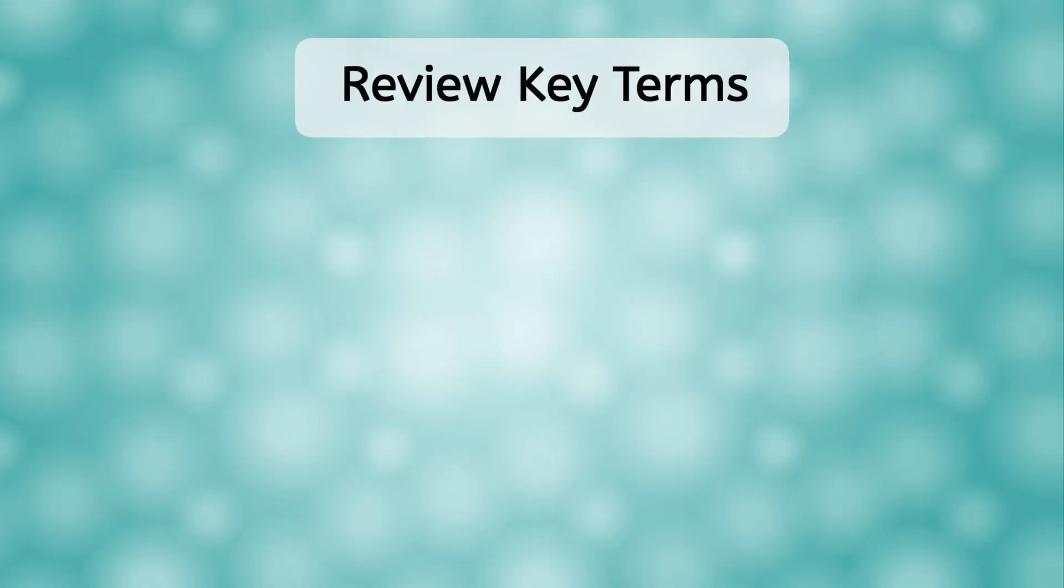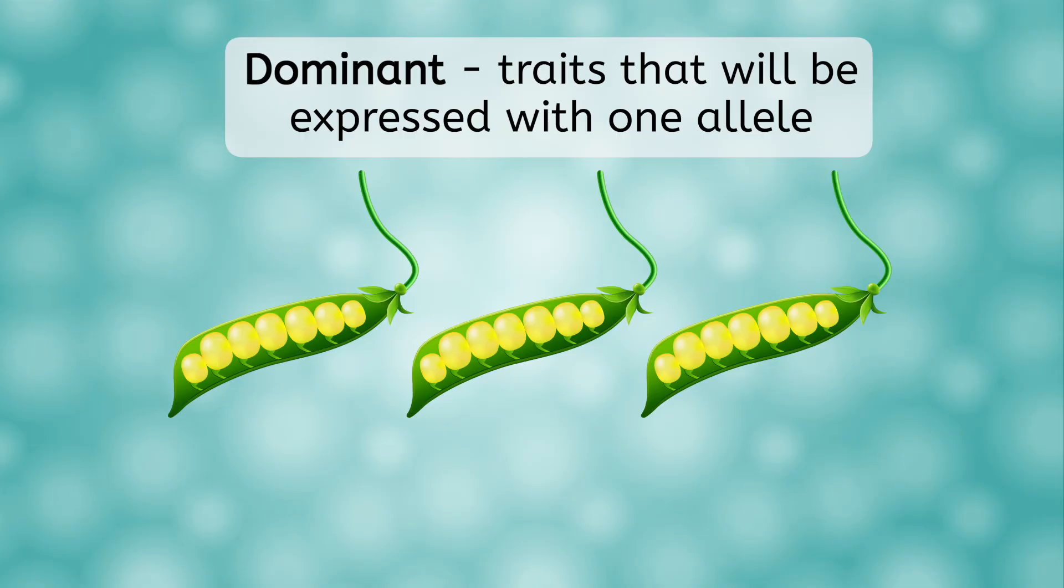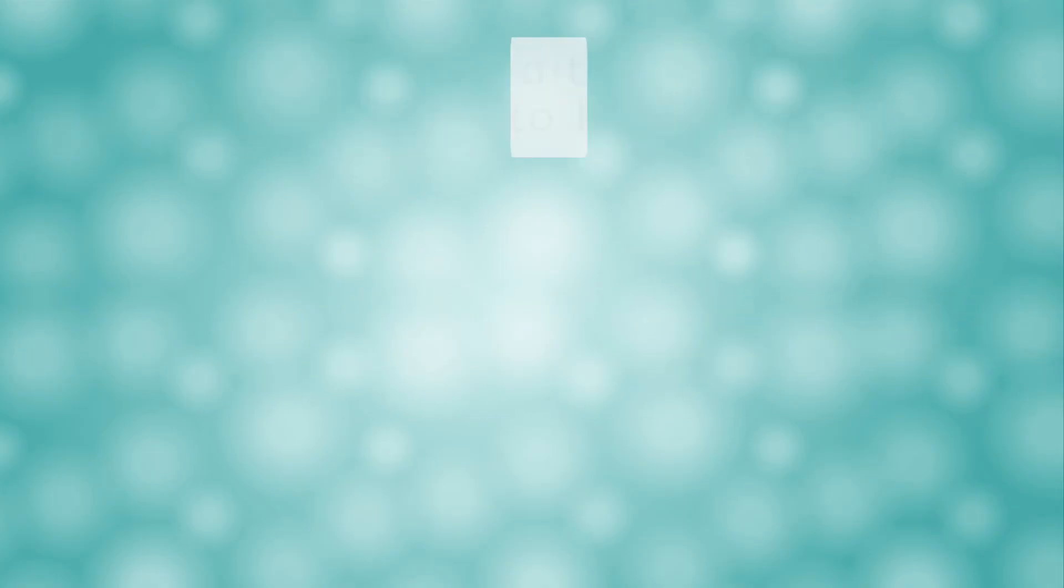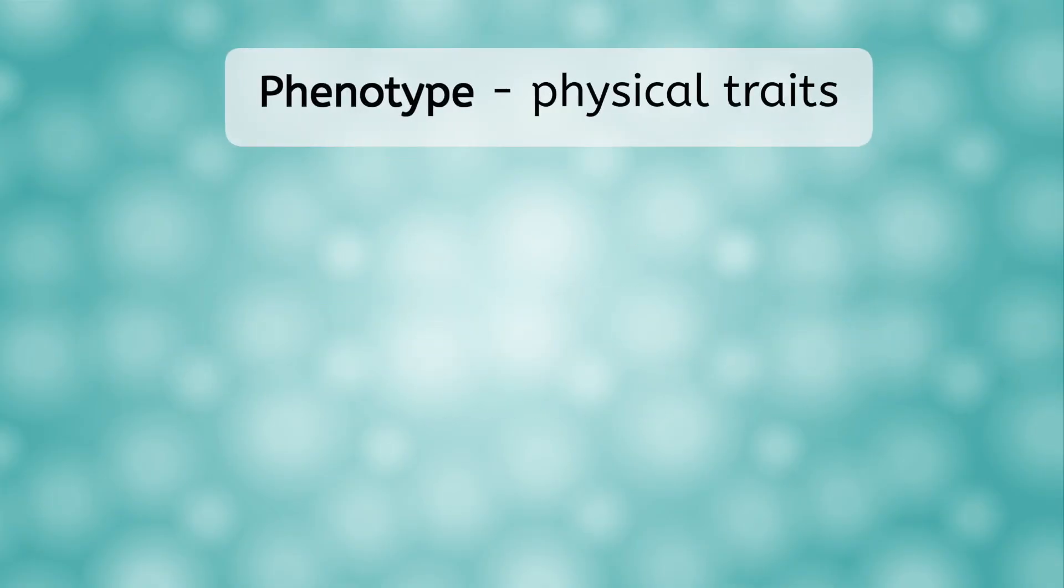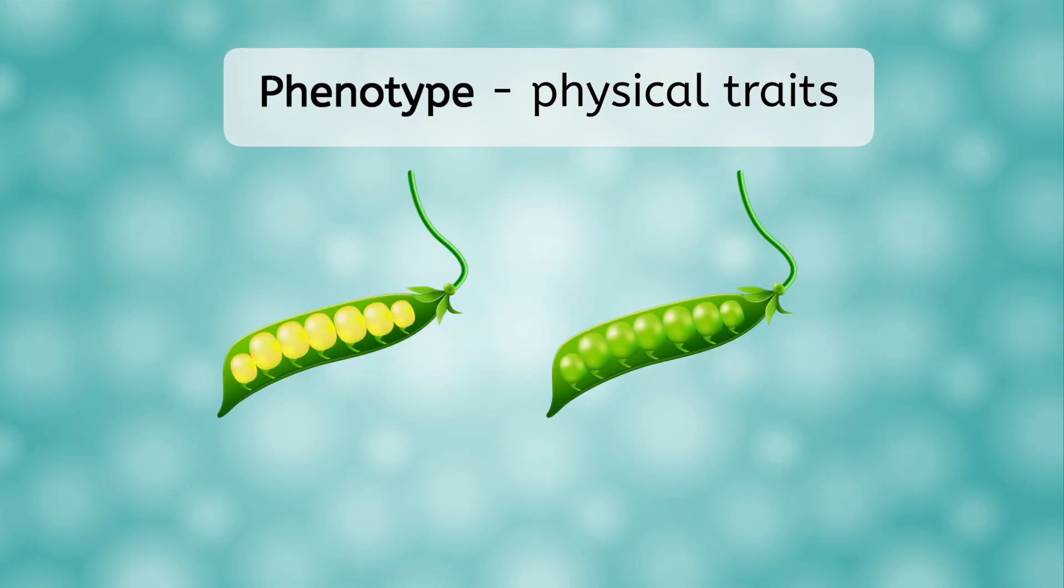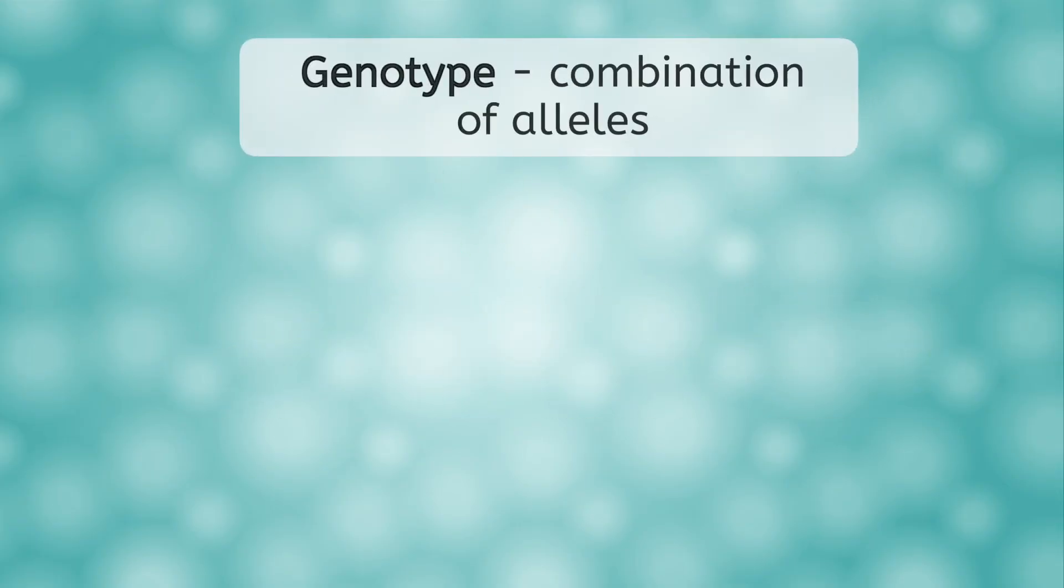Let's review some of the key terms you learned in the lesson today. We first learned about dominant and recessive traits and saw that dominant traits will always be expressed if at least one allele is present for them. Recessive traits require both alleles to be present in order to be seen. The phenotype of an organism is its physical trait, such as yellow or green seeds.